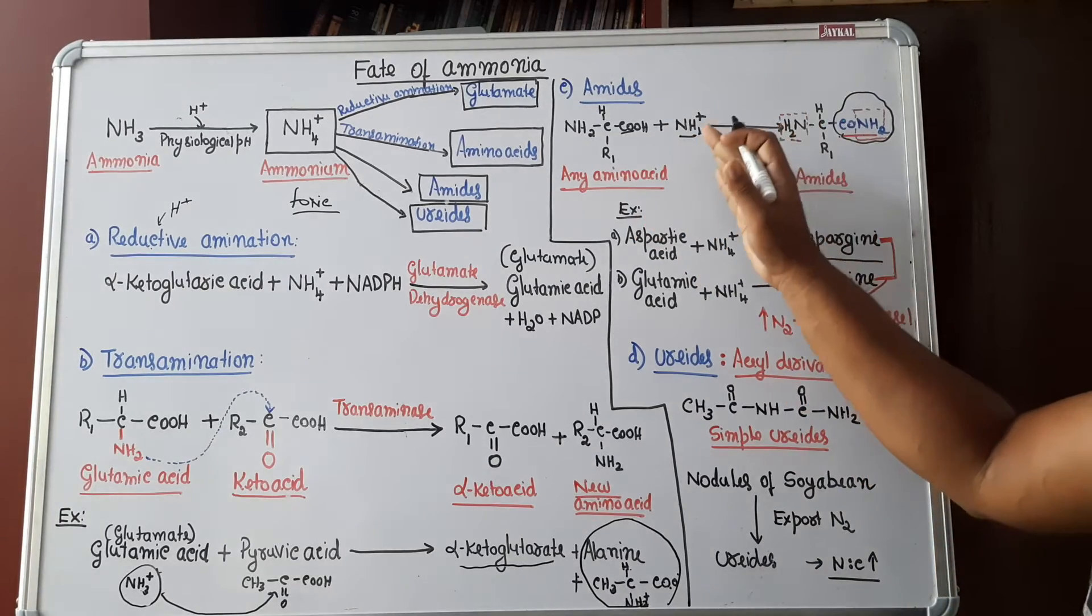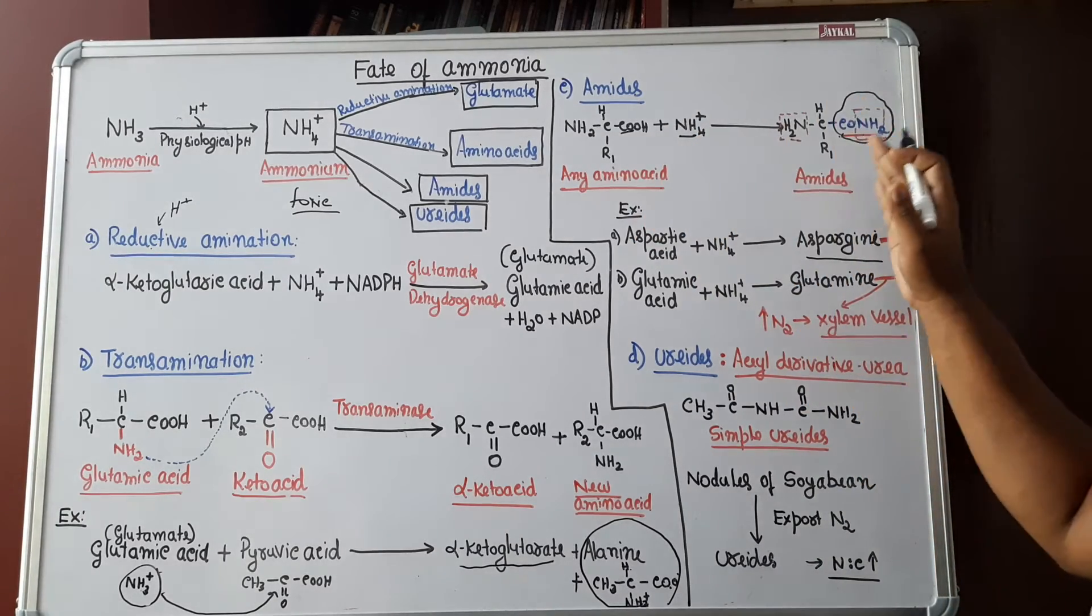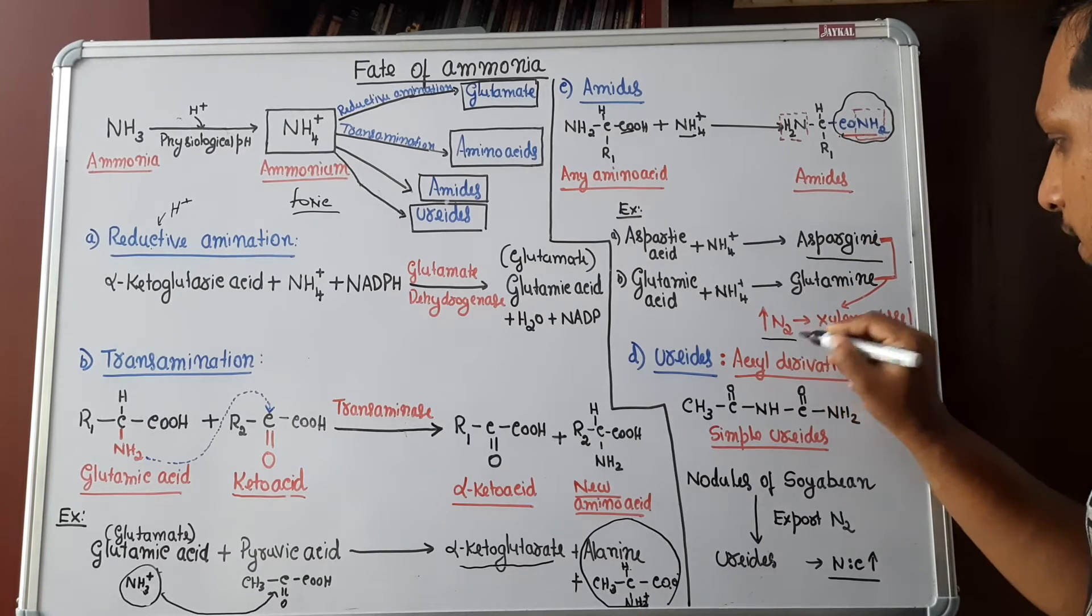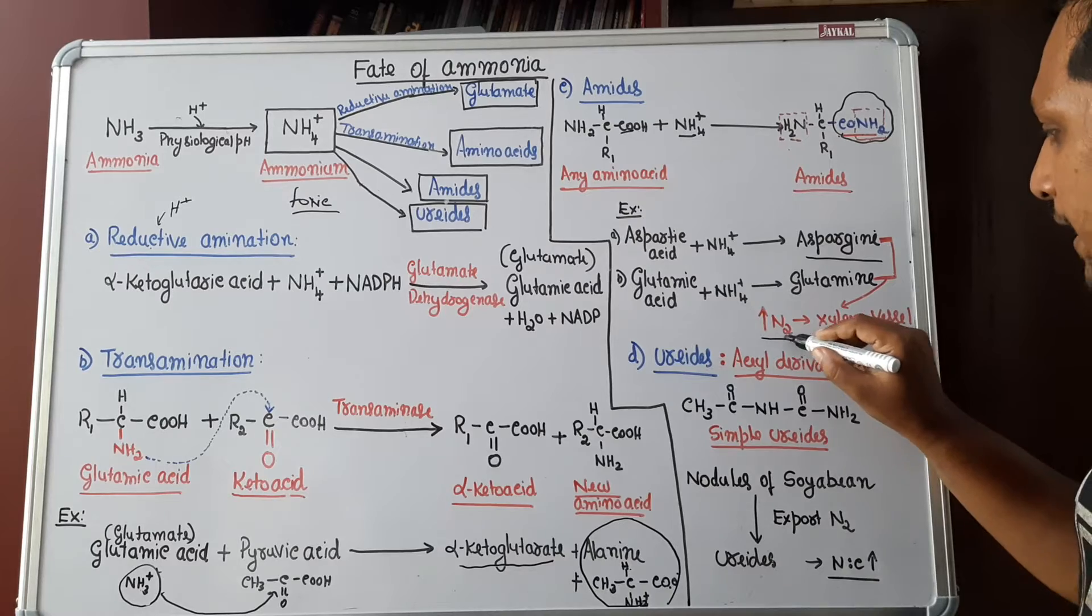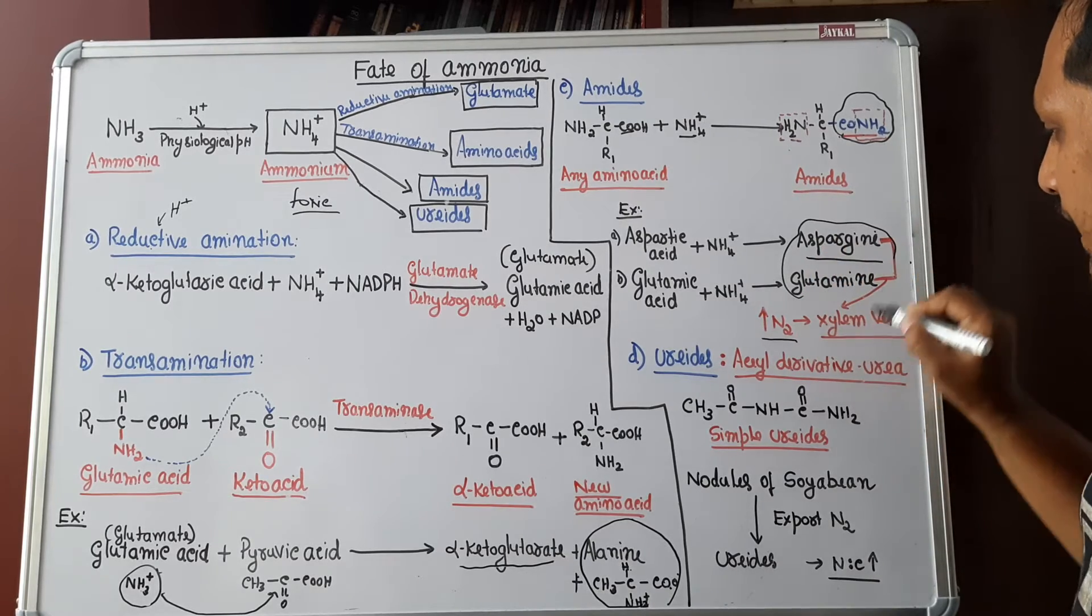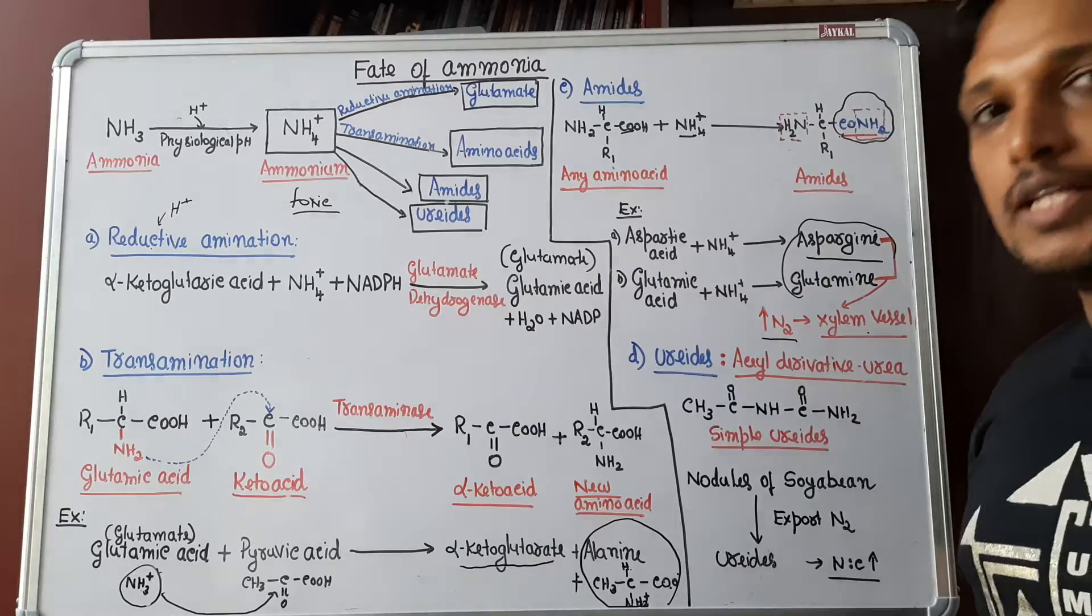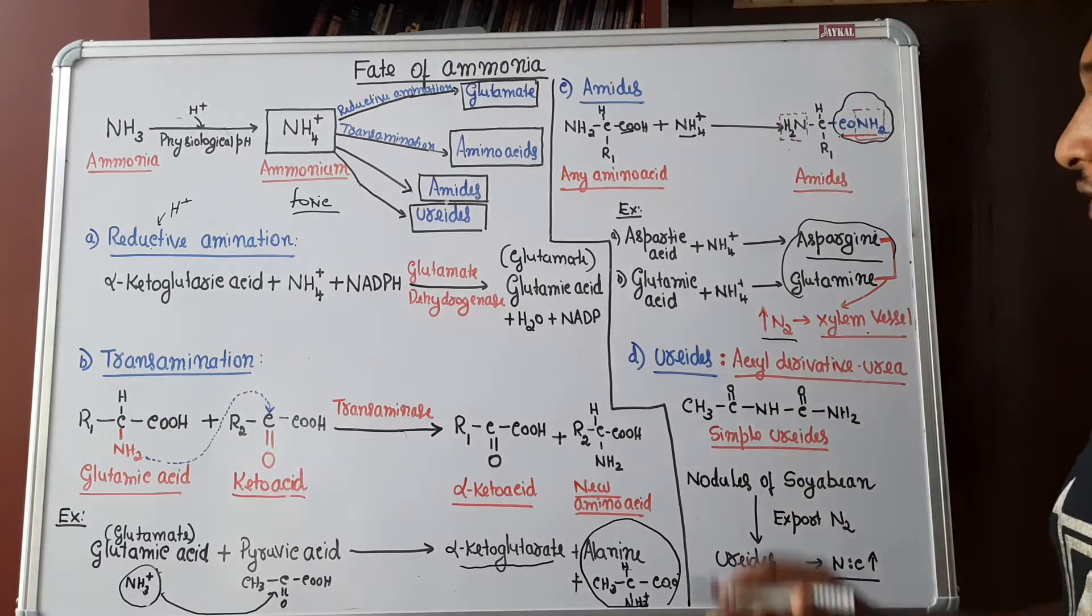So, to any amino acid, if ammonium is added, there can be formation of amide. Amides are the compounds with high nitrogen compared to amino acid. This high nitrogen amides will enter into the xylem vessel, then they are transported throughout the plant. That is the third fate.